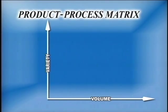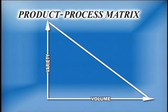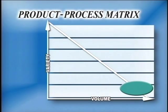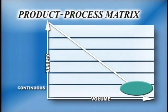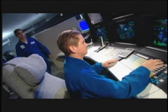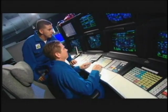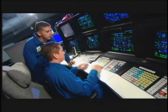The most efficient production or manufacturing processes are found along the diagonal points on the graph. When a very standardized product is needed in very large volumes, a continuous process is the best manufacturing choice. This process uses highly specialized equipment with very little flexibility, and is almost completely automated.